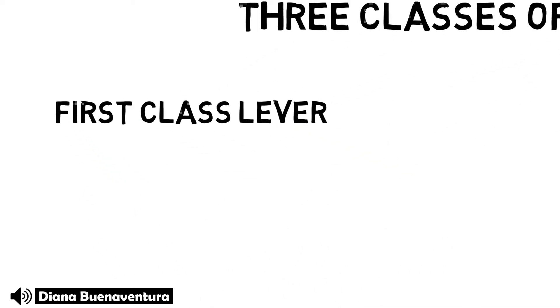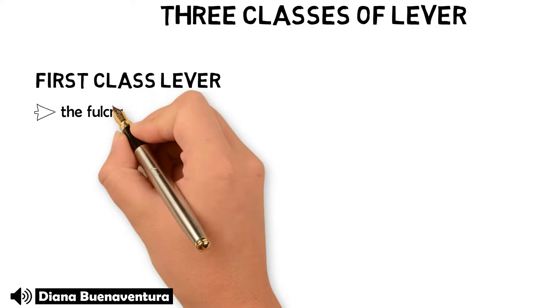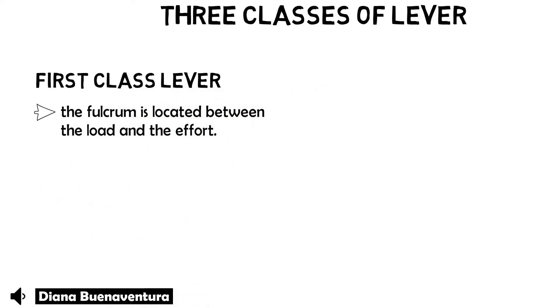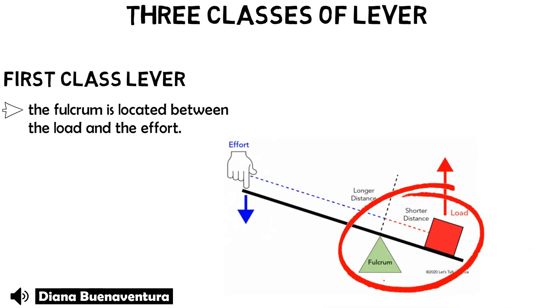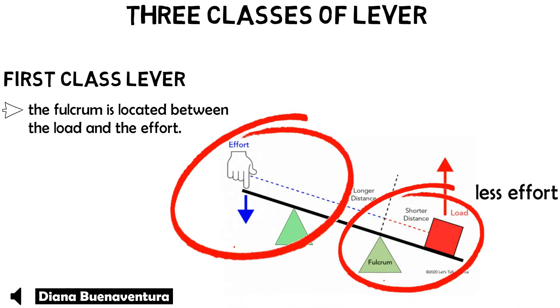There are three classes of lever. First up, the first class lever. The fulcrum of this lever is located between the load and the effort. If the fulcrum is closer to the load, then less effort is needed to move the load a shorter distance. If the fulcrum is closer to the effort, then more effort is needed to move the load a greater distance.